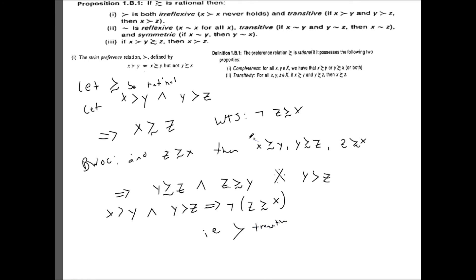Just to be clear, we showed that x is weakly preferred to z rather easily, and then by contradiction we showed that it must be the case that not z weakly preferred to x, which is just the definition of the strict preference relation being transitive. So that's it for that part.